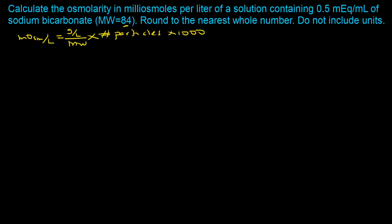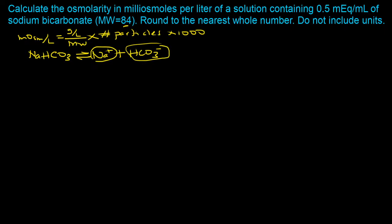The next thing we need is the number of particles. We have sodium bicarbonate, which is NaHCO₃. When placed in an aqueous environment, it dissociates into the sodium cation and the bicarbonate anion. So the number of species — or the number of particles — is two.